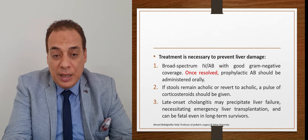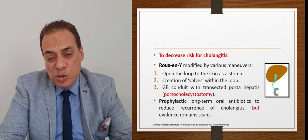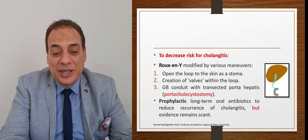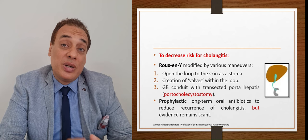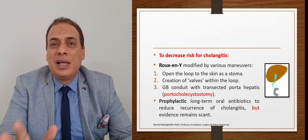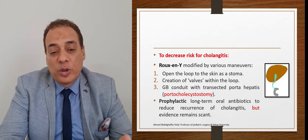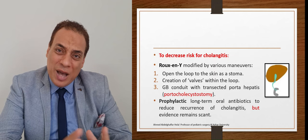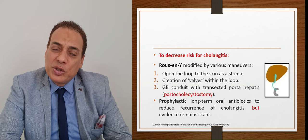Various modifications have been attempted to decrease cholangitis incidence — including valves within the Roux loop, porto-cholecystostomy conduit between the gallbladder and porta hepatis, and long-term prophylactic antibiotics — but evidence remains scarce and these modifications show no clear benefit over standard Roux-en-Y reconstruction. Some researchers explored using the appendix as conduit, but this is not used today.